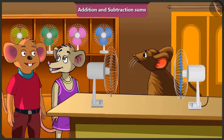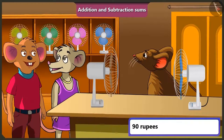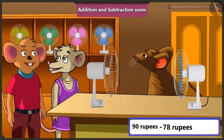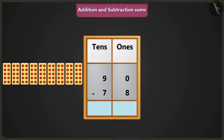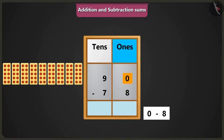If I sell the old fan, I will have a total of 90 rupees. So if I give 90 rupees to the fan seller and buy a new fan for 78, how many rupees would I have left? Let's put 90 and 78 in the ones and tens boxes and subtract 78 from 90.